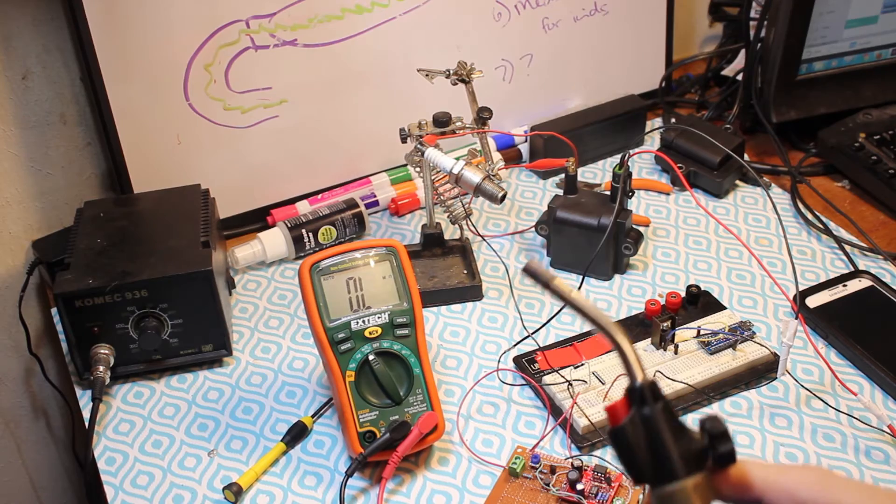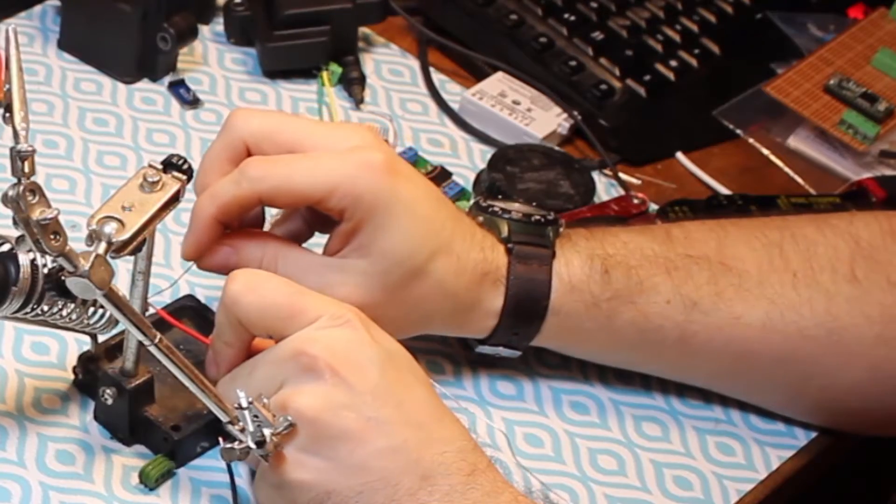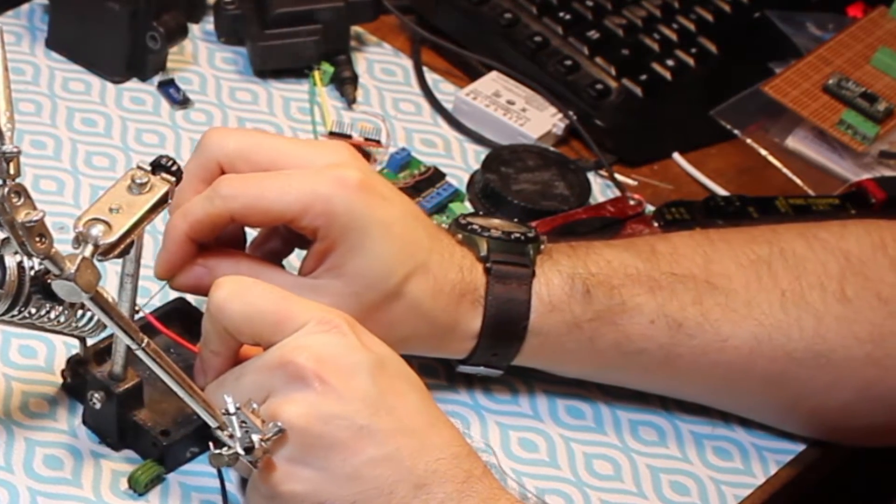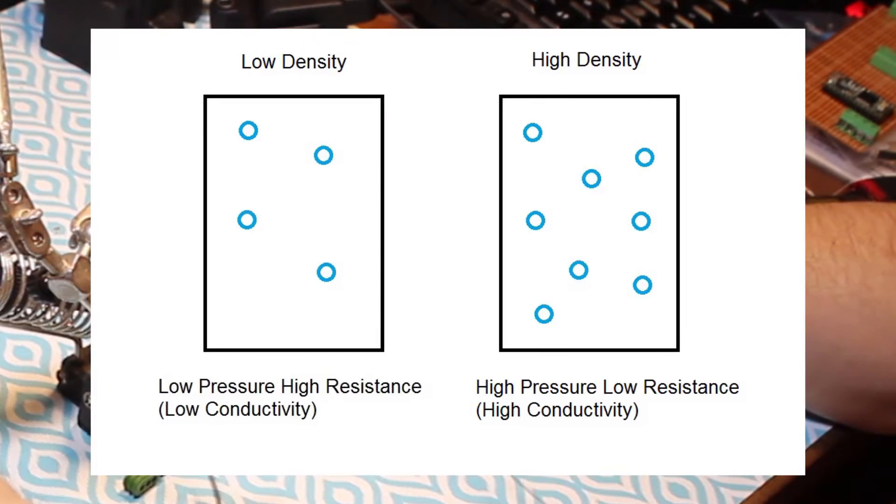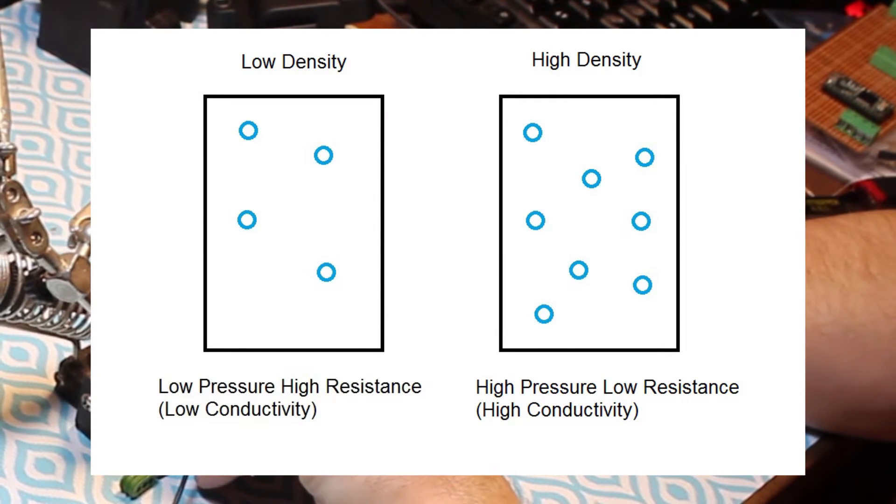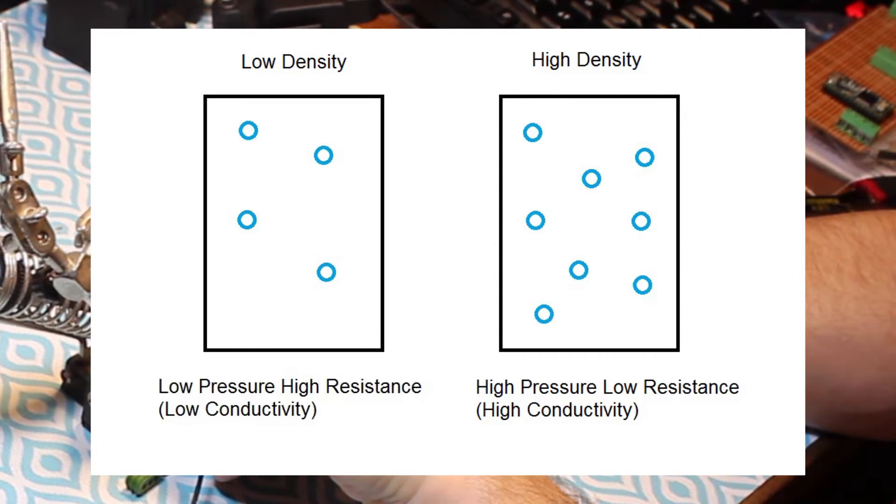But once you ionize the air, like with a torch, the resistance goes down. And if you then use a high voltage, this resistance becomes relatively easy to measure. But not only does this resistance show the presence of ions, it also varies with the density of the ions. So it relates to the pressure of the air.